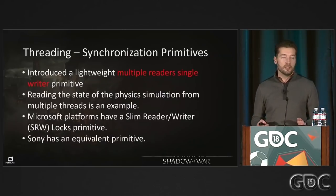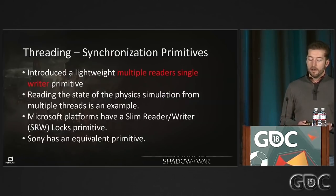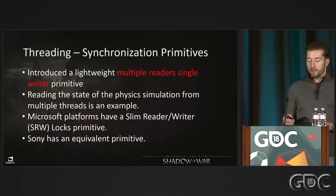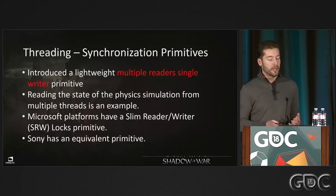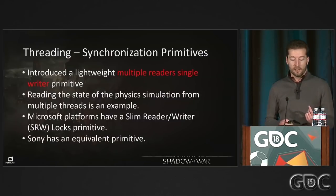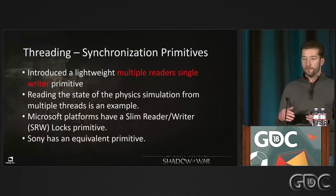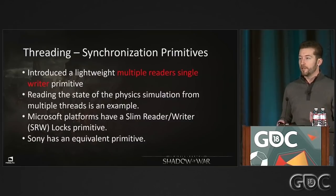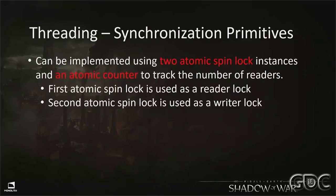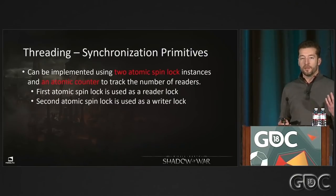We also introduced a multiple-reader, single-writer primitive that we didn't have in Shadow of Mordor. Previously we used kernel semaphores, which are expensive. Lightweight versions exist: Microsoft's is called the Slim Reader Writer Lock. We use this for our physics system, which is written once a frame but read by any thread on any core for the rest of the frame. You could also implement this yourself using two atomic spin locks guarding reader and writer, plus an atomic counter tracking active readers.